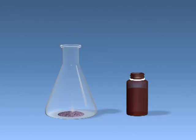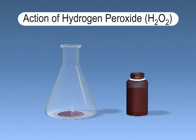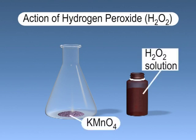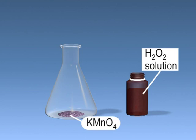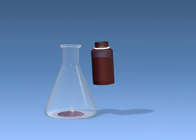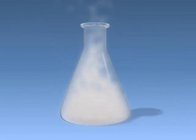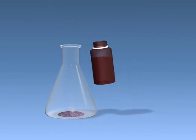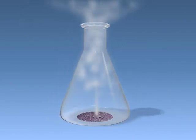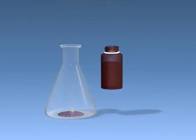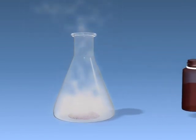Now we will see the action of hydrogen peroxide on potassium permanganate solution. When hydrogen peroxide solution is added to potassium permanganate in a conical flask, white fumes are formed. When the same reaction is repeated, white fumes are again formed.